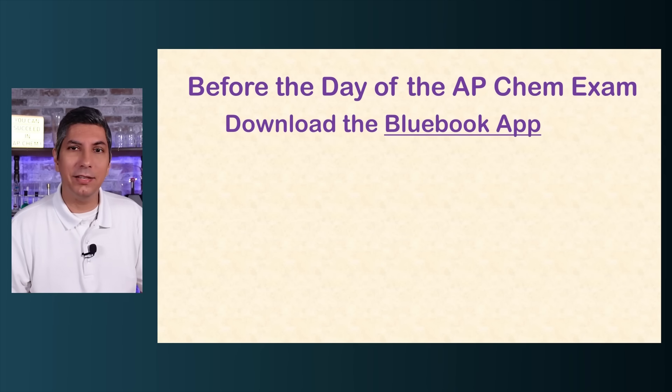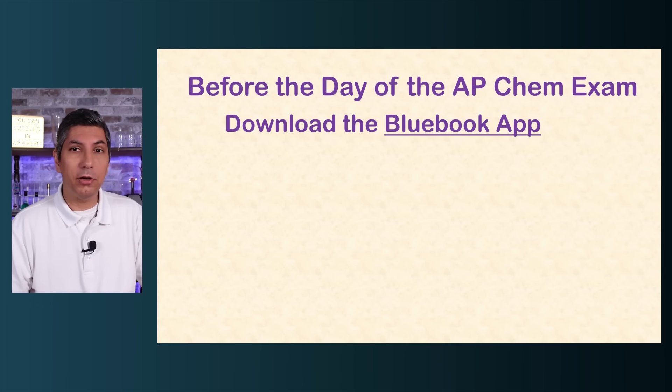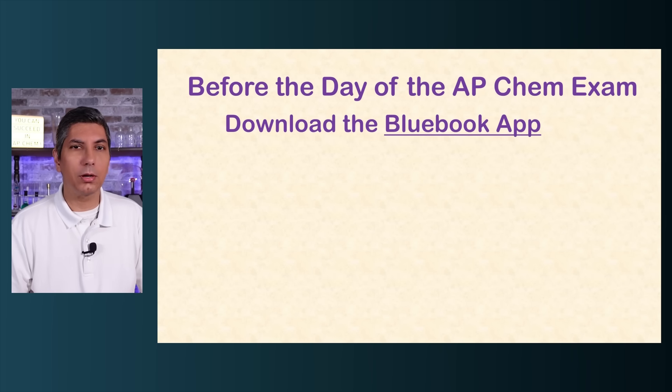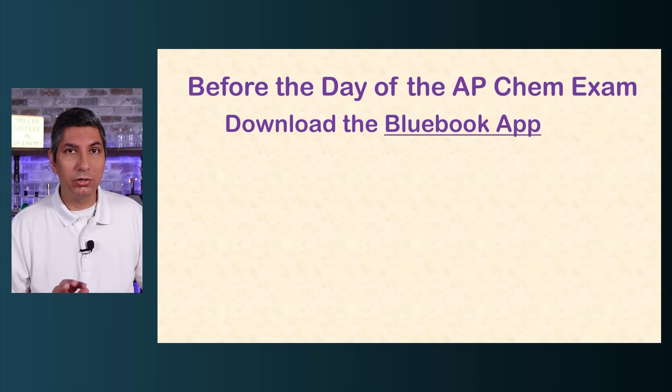Let's start with some of the things you need to do before the day of your AP exam. This year's AP Chemistry exam will be administered through the Blue Book app provided by College Board. Well before you take the exam, you'll need to make sure the Blue Book app is downloaded onto your testing device. You can use a personal laptop, desktop computer in a computer lab, or a school-issued device like a Chromebook. You can use a tablet like an iPad, but you cannot use a mobile phone.